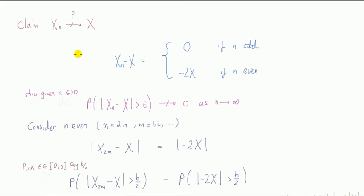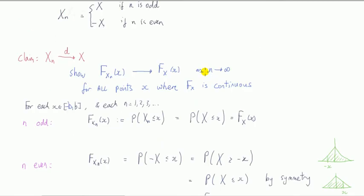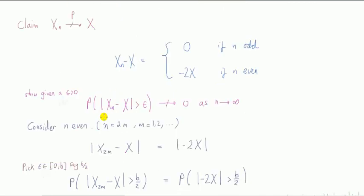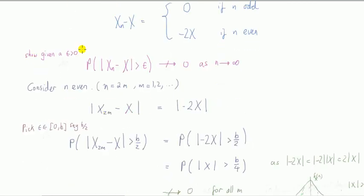Now our claim is it doesn't converge in probability to X. Right, so I get this difference of the random variables to be this. How do I subtract it? Well, I've subtracted the number x from here, so minus x minus x is 0, minus x is minus 2x. I'm interested in this because the definition of convergence in probability is I'm interested in this difference here.